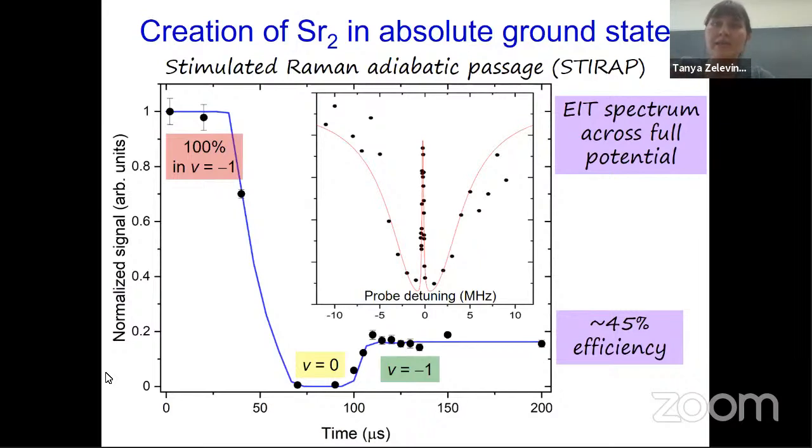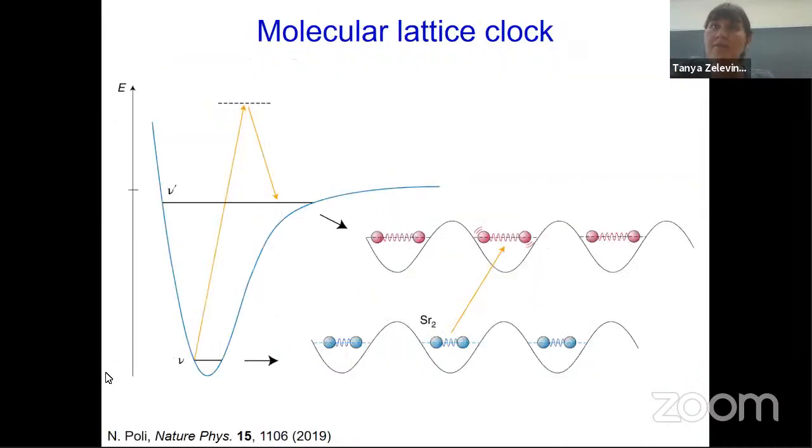We cannot see these deeply bound molecules directly. So we reverse this STIRAP process and recover the molecules in the weakly bound state. And from the number of the recovered molecules, we can deduce the one-way transfer efficiency, which is roughly 45% in this trace. But with more laser power, the efficiency can certainly be increased. The blue line is a simulation based on the optical Bloch equations where there are no free parameters.